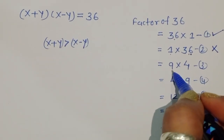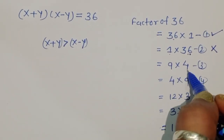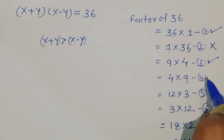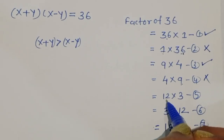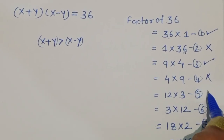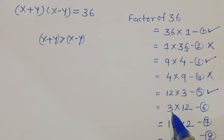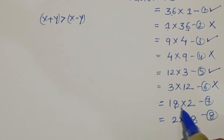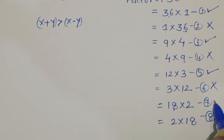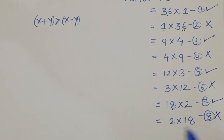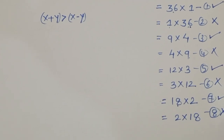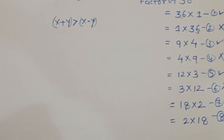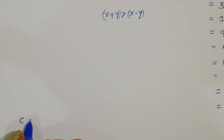For 9×4: 9 is greater than 4, so x + y > x - y — this is correct. For 4×9: 4 is less than 9 — rejected. For 12×3: 12 is greater than 3 — correct. For 3×12: x + y is less than x - y — rejected. For 18×2: 18 is greater than 2 — correct. For 2×18: 2 is less than 18 — rejected. So we have 4 valid cases.